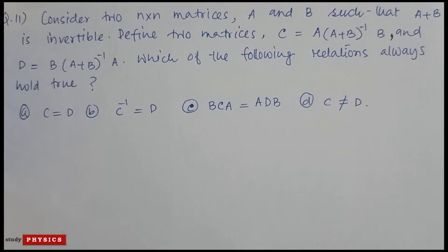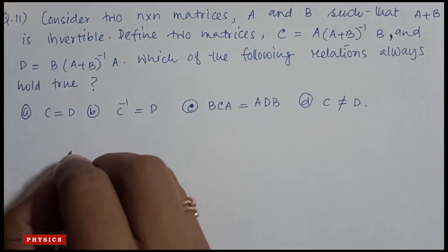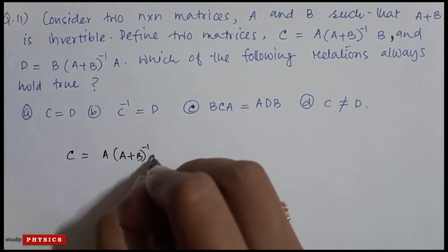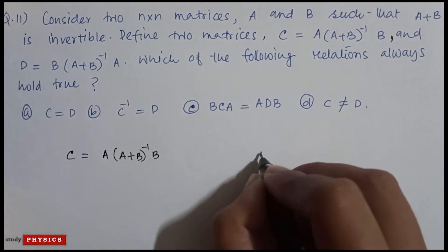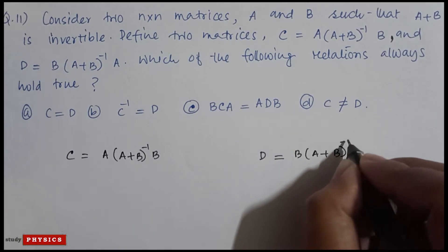Question 11: Consider two n by n matrices A and B such that A plus B is invertible. Define two matrices C equal to A into (A plus B) inverse into B, and D equal to B into (A plus B) inverse into A. Which of the following relations always hold true?